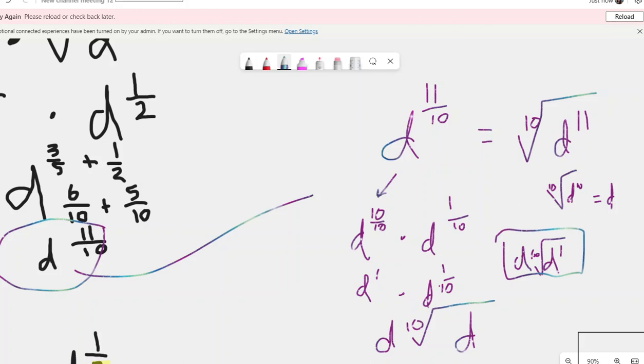That's the product property. What about the quotient property and the power of a power property? Obviously, those are ones to look at as well.